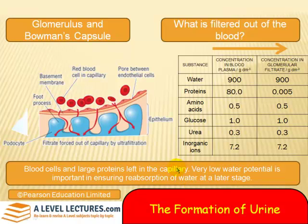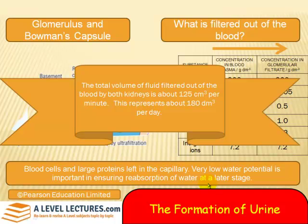When blood leaves via the efferent arteriole, it has a very low water potential, meaning it can readily absorb substances at a later stage inside the kidney. The total volume of fluid filtered out of the blood by both kidneys is about 125 cubic centimetres per minute — representing about 180 litres a day. Imagine if nothing was reabsorbed — you'd spend your whole day going to the toilet, so much of this has to be reabsorbed.